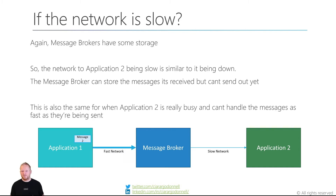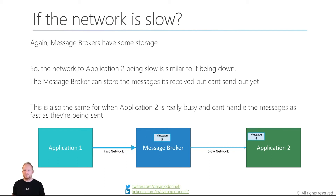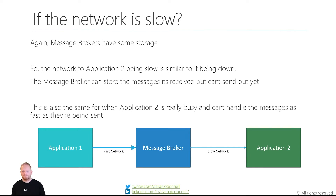If the network is slow or the application is slow, again, the storage in the message broker is going to come in useful. Application two being slow is similar to it being down — the message broker can store those messages it's received but can't yet send out. When application two is ready to receive them, it's able to send them on. So application one can push messages out real fast, the message broker will store them up and forward them on at a slower rate as fast as application two can actually receive them.